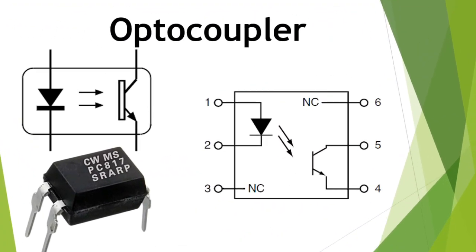Then we have the optocoupler. Basically, the optocoupler is one of the main important components in every switch mode power supply. The optocoupler contains inside it two components: a photo transistor and a light emitting diode. For this kind of optocoupler or opto-isolator with four terminals, we have here an LED diode that emits light, and here we have a photo transistor. The photo transistor works exactly as a normal transistor, but instead of a voltage at its base, it receives light — so the photo transistor is controlled by the light emitted by the diode. We find this kind of optocoupler in switch mode power supplies.